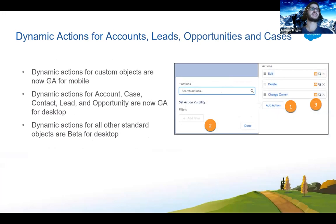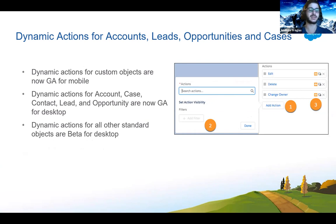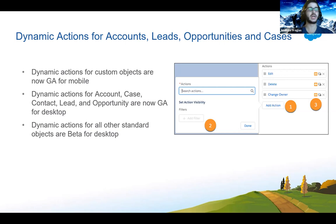Dynamic Actions is now available for accounts, leads, opportunities, and cases. It also becomes GA for mobile for custom objects with this release. Dynamic Actions for account, case, contact, lead, and opportunity are now GA for desktop. Dynamic Actions for all other standard objects are beta for desktop. Dynamic Actions allows you on a Lightning page layout to show and hide actions given certain criteria, giving more flexibility from a user experience point of view.